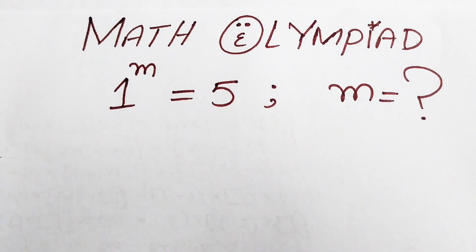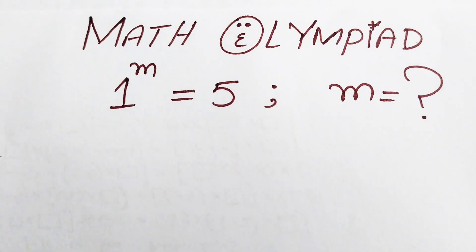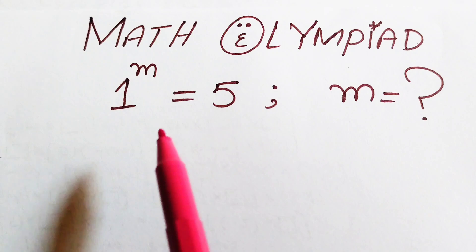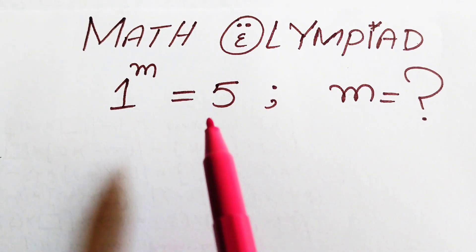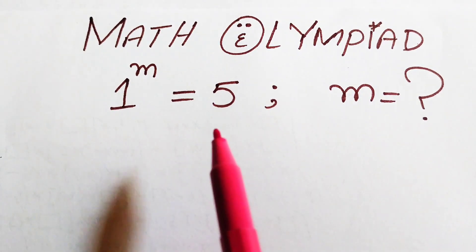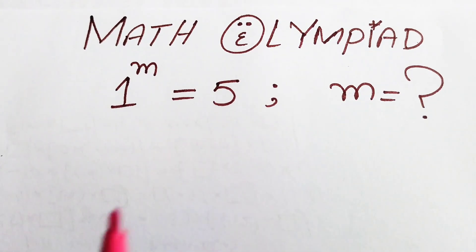Hello everyone, welcome. We solve this math algebra problem: 1 to the power of m equals 5, and we solve this problem for the values of m.